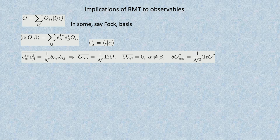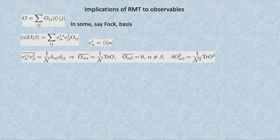Let's try to apply random matrix theory to observables and see what predictions it makes. Let's assume we have some observable which is not random — it's a matrix in some fixed basis, say a Fock basis. This observable could be a number, and then it will be diagonal in the Fock basis. We can ask: what are the matrix elements of this observable in eigenstates of the Hamiltonian? If my Hamiltonian is a random matrix, these eigenstates are random unit vectors which are orthogonal.